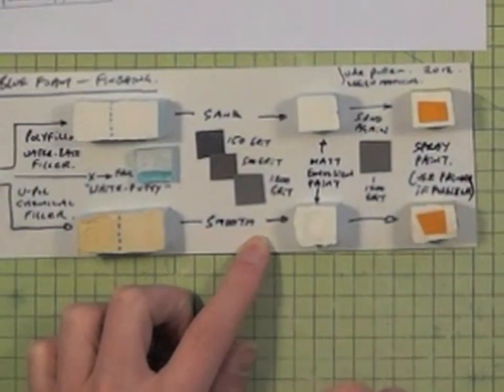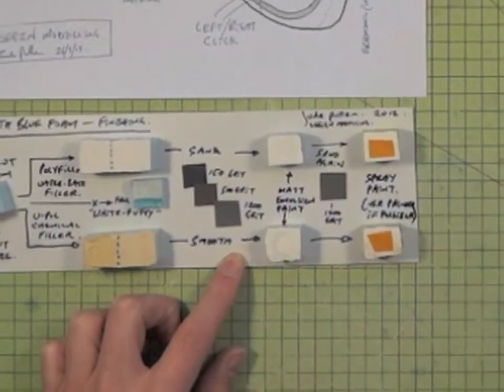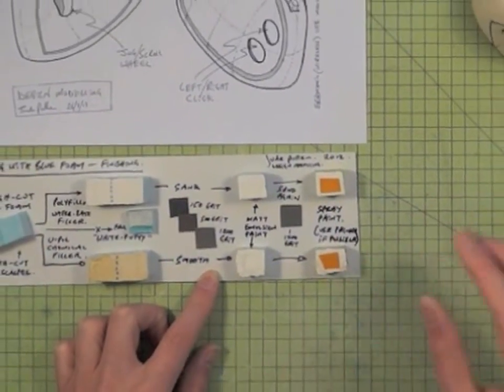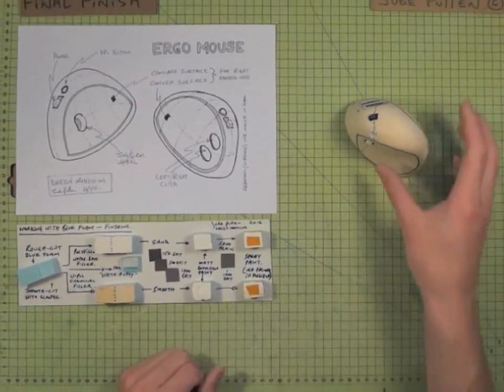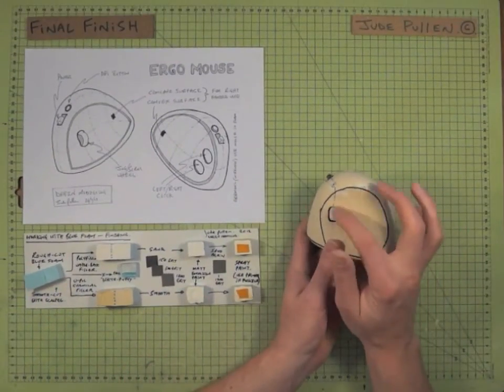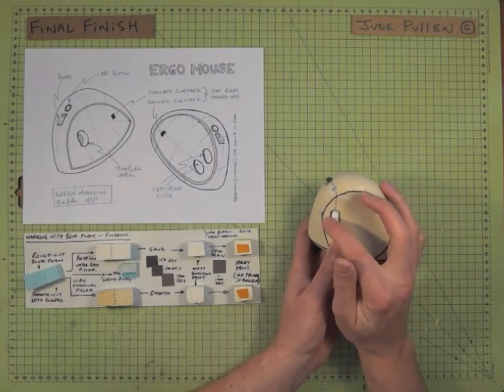And again, the classic advice of spraying little and building up layers is far better than trying to cover the whole thing in one. Obviously, with details like this, you'll need to cover up with masking tape.